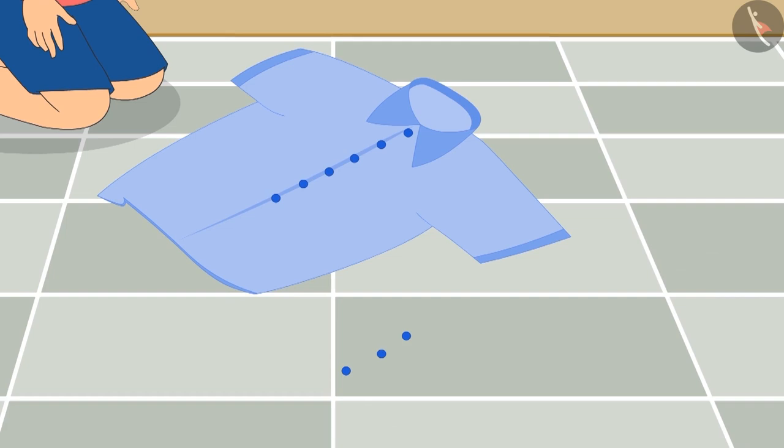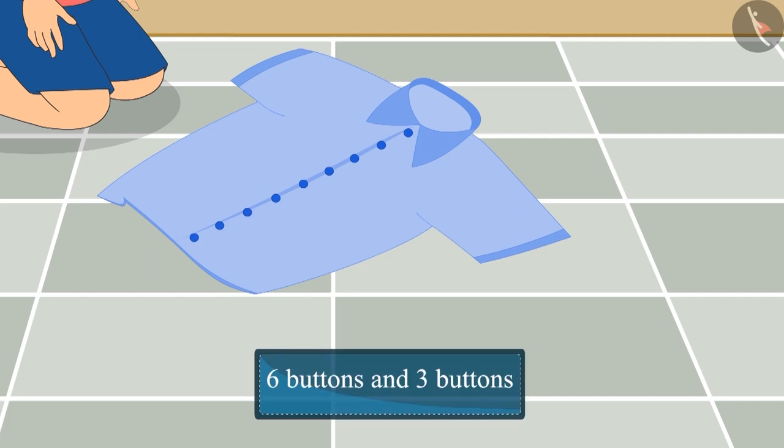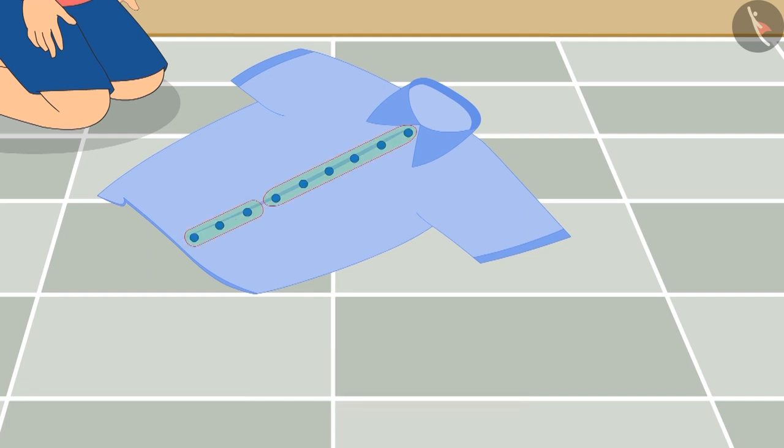Good work. In the end, Chotu stitched three more buttons on his shirt. So now there are six buttons and three more buttons. Now what is the total number of buttons stitched on his shirt?